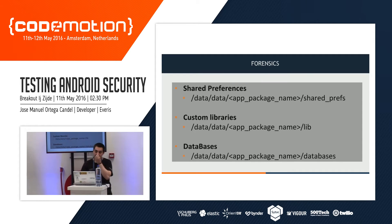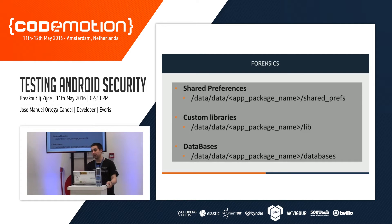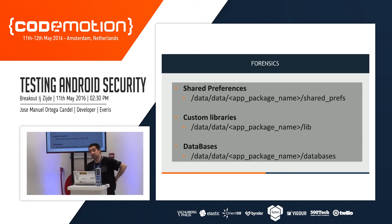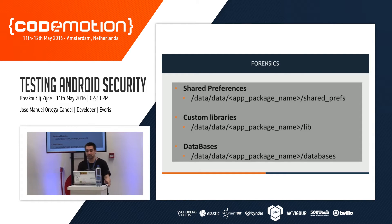In specific forensics in Android, we have the data directory where all the files the application is using internally are stored. For example, shared preferences — we can see the shared preferences of the user. Custom libraries that the application uses will appear in this directory. For example, if the application has an active library, it will appear here. Databases — if the application is using SQLite, the database will appear in this directory.